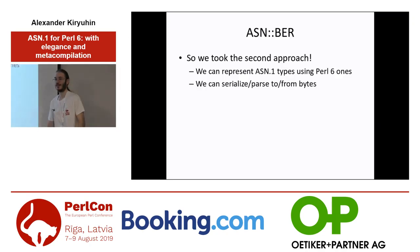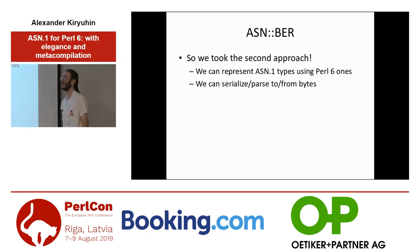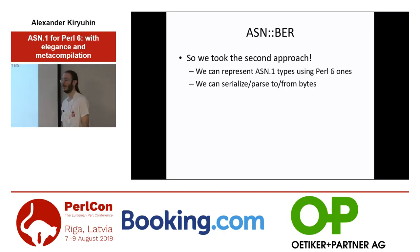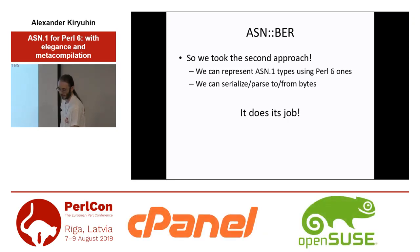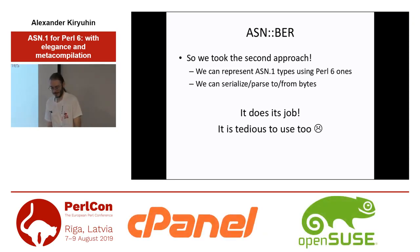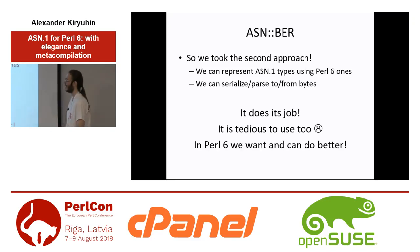So firstly in Perl 6 I took the second approach — we can represent ASN.1 types using Perl 6 types. We have a parser and a serializer for Perl 6. And it works, it does its job for my CRO LDAP module. But it also sucks to use. And so in Perl 6, I thought that we can and we want to do better.